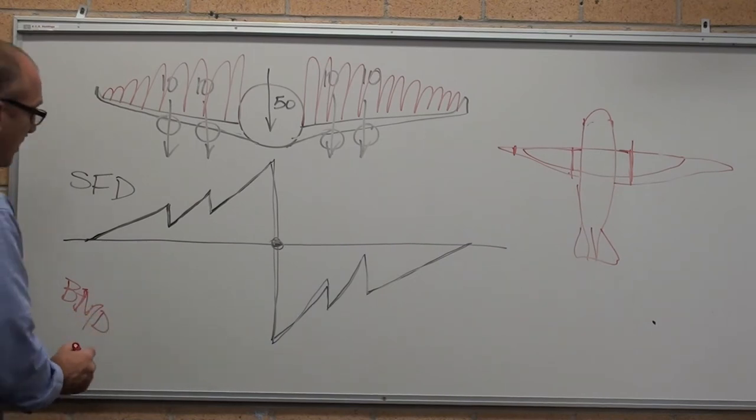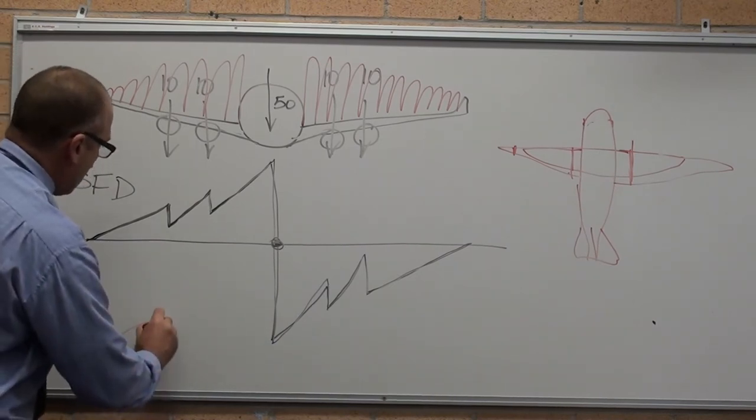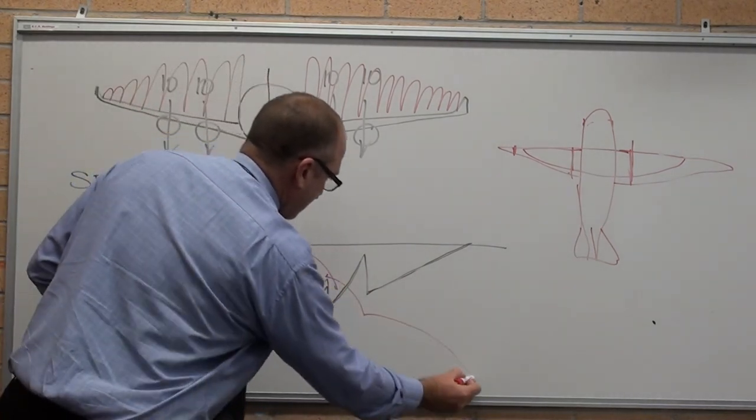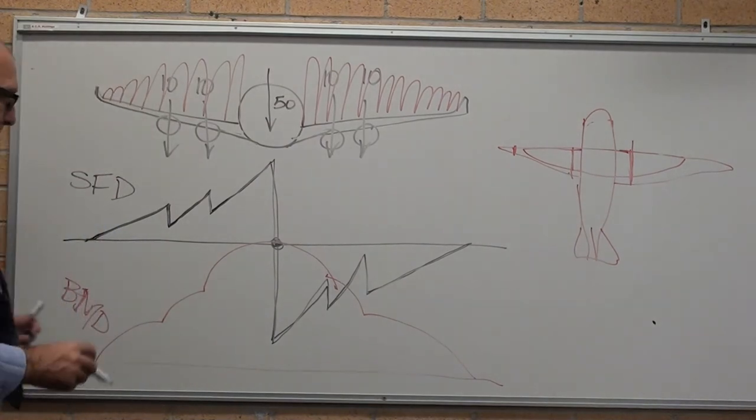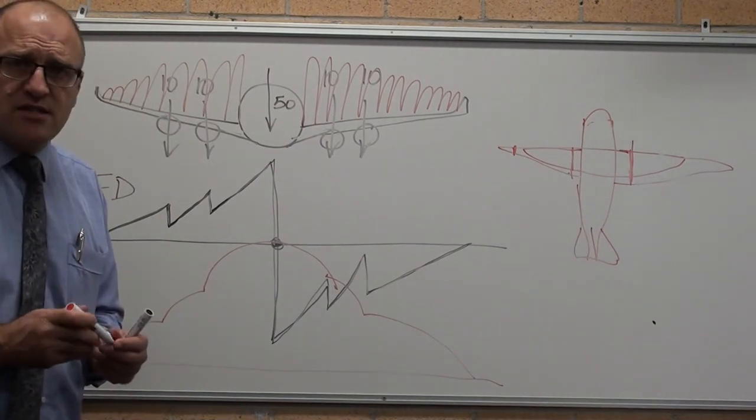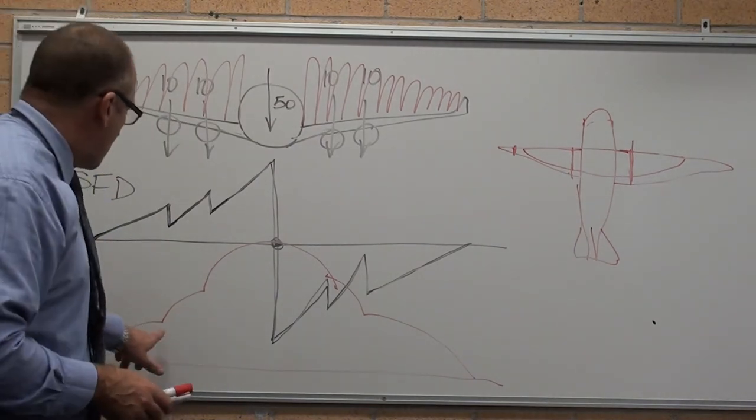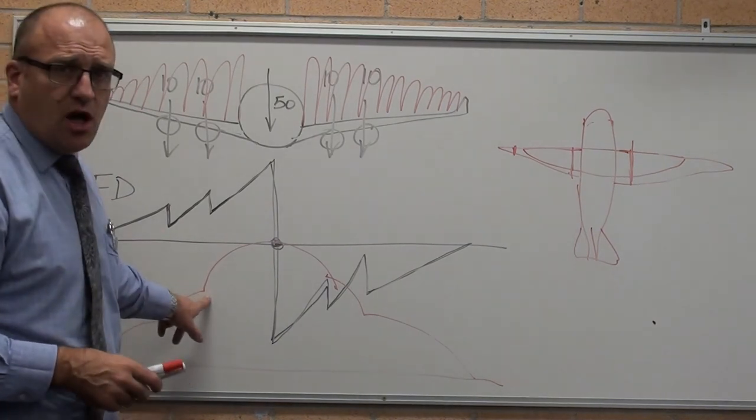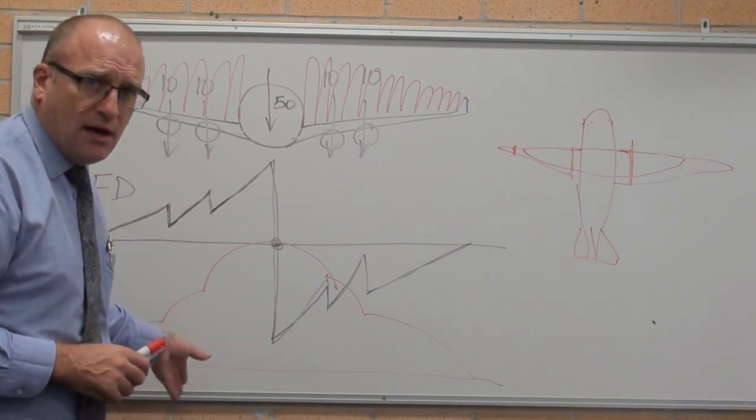Bending moment diagram is essentially a parabola, or a series of parabolas that change inflection point each time you hit a point load.